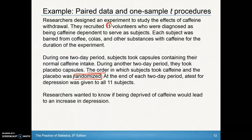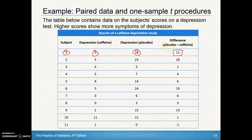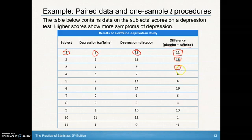The researchers wanted to know if being deprived of caffeine would lead to an increase in depression. Looking at the scores, subject number one had a depression score of 5 with caffeine and 16 with the placebo. So we see a positive difference when we take the placebo depression score minus the caffeine score. It does seem that depression scores go up for most subjects when they don't have their caffeine — most subjects appear more depressed without it.